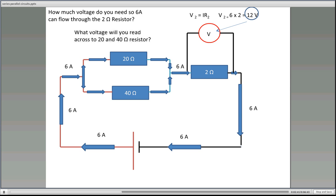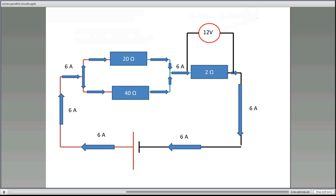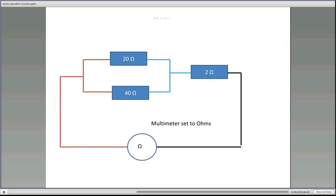So what voltage will you read across the 20 and the 40 ohm resistor? So to work out the supply voltage, you will need to know all the voltage drops, that's one way, or the total resistance and the total current. So we can work this out two ways. So if we set our multimeter set to ohms, what would be the total resistance of this circuit here? So we'll do some calculations here and some mathematics.